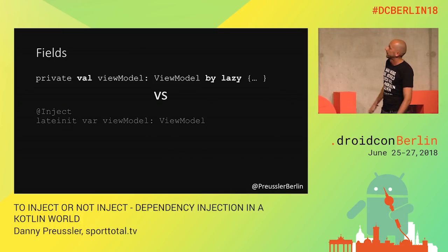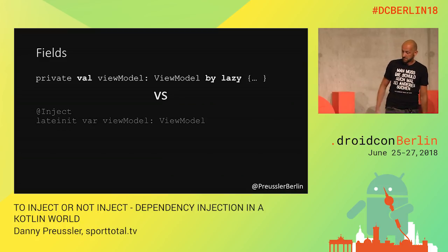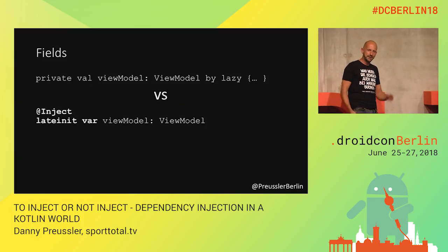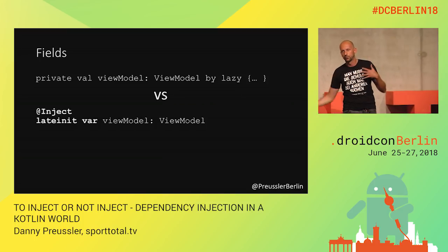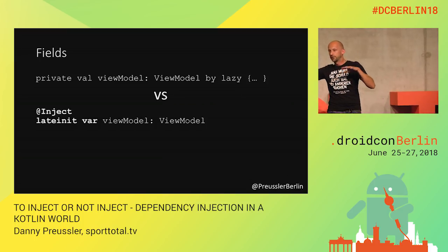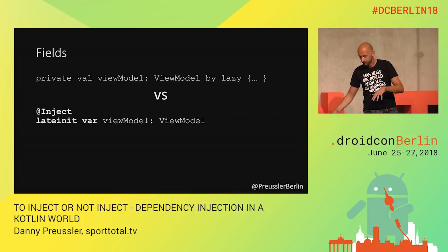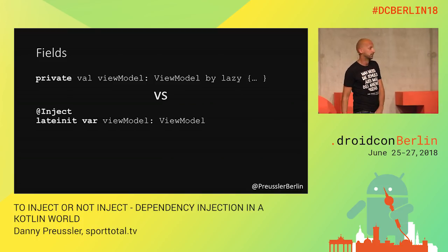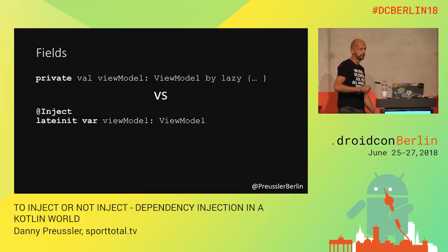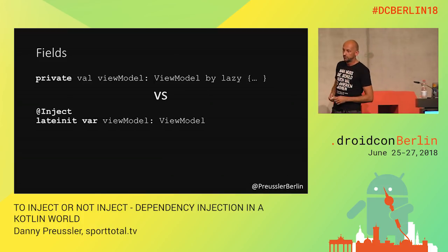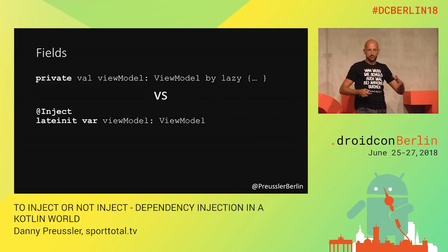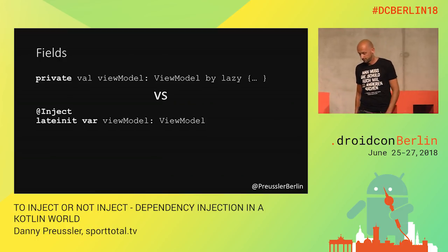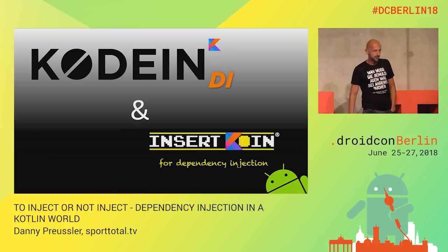Let's look at injected fields. I could write this without injection — val, by lazy, and then get it from somewhere. But to inject this, I have to make it a lateinit var. It already looks ugly. Lateinit means: 'believe me, you cannot check that I'm setting it, but I'm setting it at some point before I use it.' And it's not private anymore — one of the things we gave up with Dagger and code generation is encapsulation. We made all our fields public for annotation processing.